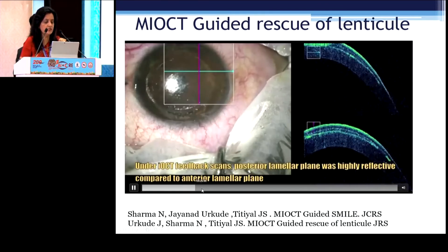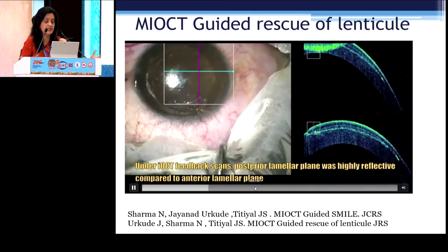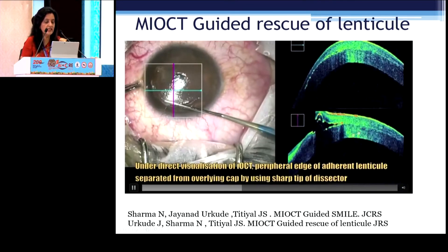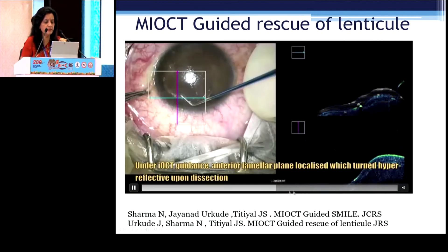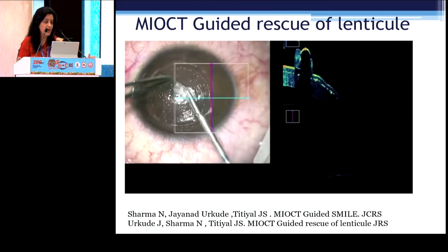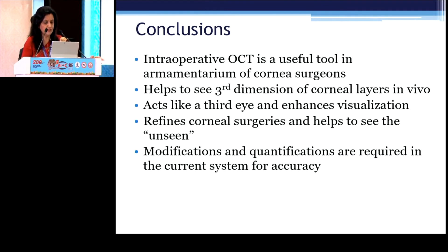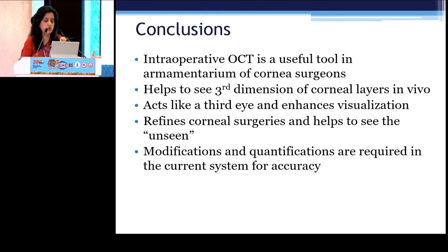If you cannot figure out where the lenticule is — you've done too much needling and don't know where it is — you can straightaway take the patient to the intra-op OCT microscope, see where the level of the lenticule is, and even if small bits and pieces of the lenticule are left, you can take it out. We got two publications out of this, and each of these cases I've shown is already published in literature. It just helps you to see the third dimension. In all other specialties also, diagnostics would be married to therapeutics to get a better insight on the day of surgery itself, rather than having to figure things out in the post-op period.